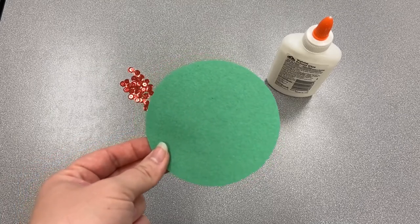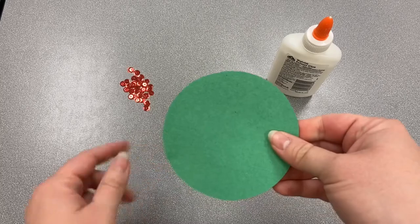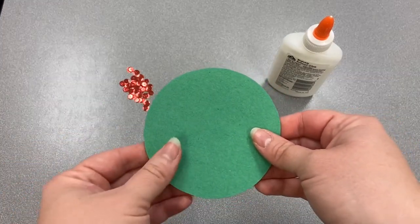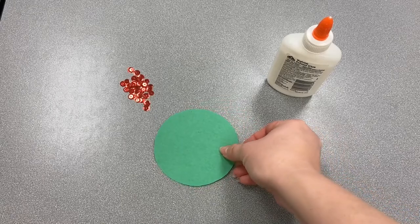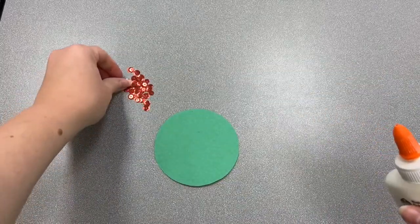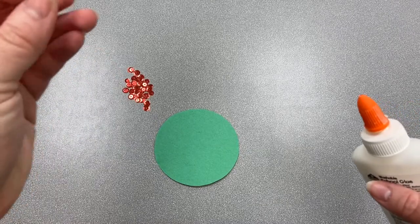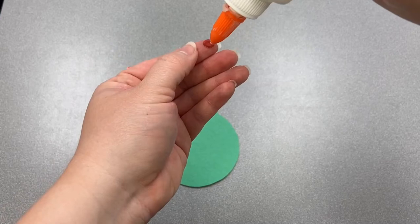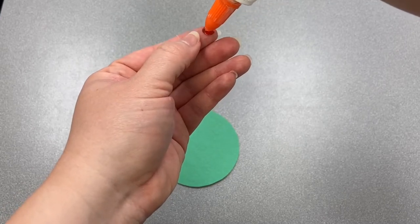The sequins will be the apples in our tree. We're going to use our glue to glue some of the apples on. I think it works best if you flip the sequin over and put just a little dot of glue right on the sequin so you know where it's going.